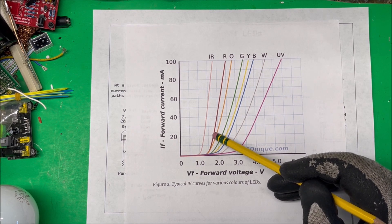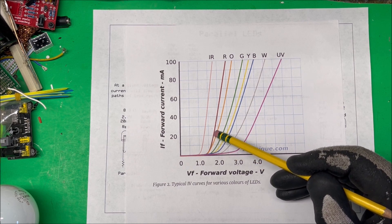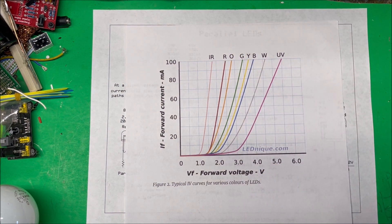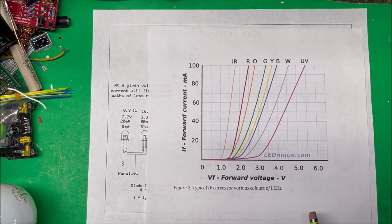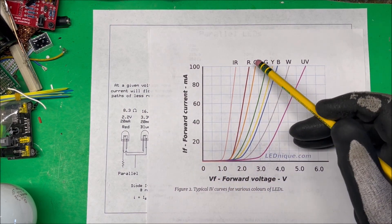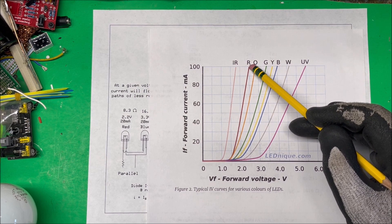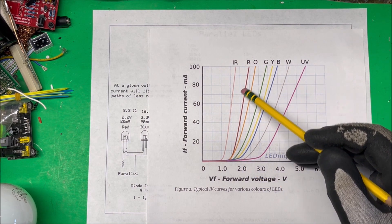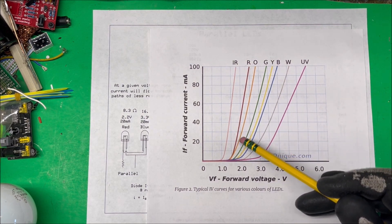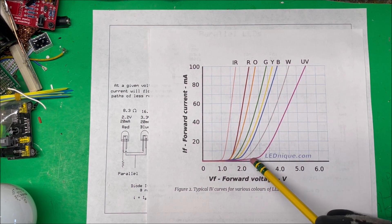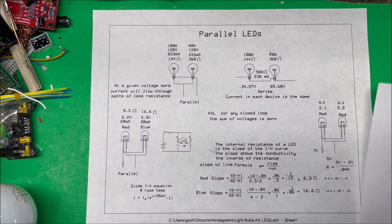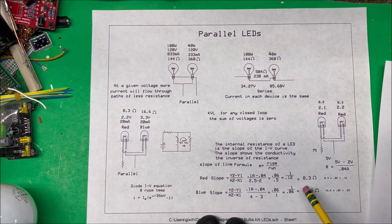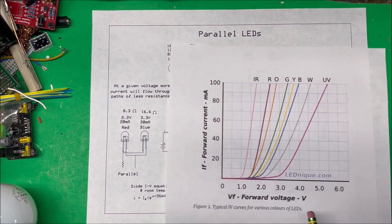At a point like 20 milliamps, you can use calculus to find the slope of the tangent line and get your resistance. Since this is nearly a straight line, we'll just take the slope — rise over run. For the red LED, at 100 milliamps it's at 2.5V and at 40 milliamps it's at 2V. Subtracting and dividing gives a slope of 0.12, which is the conductance. The reciprocal gives 8.3 ohms.